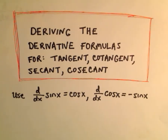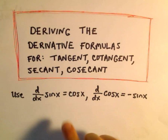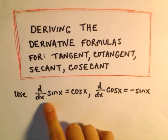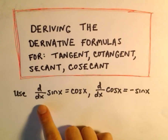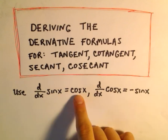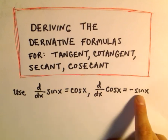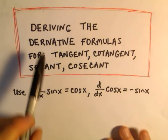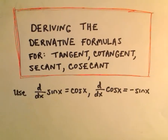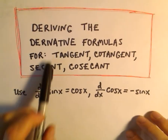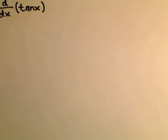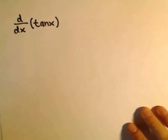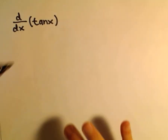In this video I want to talk about deriving the derivative formulas for tangent, cotangent, secant, and cosecant. We're basically going to use the fact that the derivative of sine is cosine and the derivative of cosine is negative sine. Sometimes people forget their derivatives, so just don't memorize them — or do memorize them — but also be able to justify them if you forget, because I think it's not too bad to do.